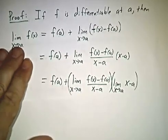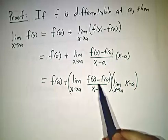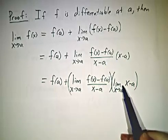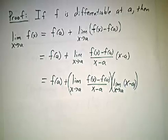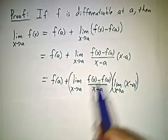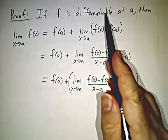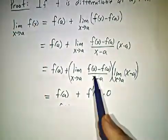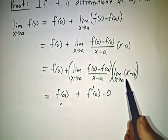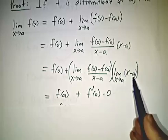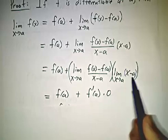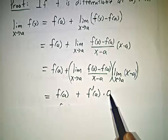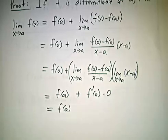Now we use one of our limit rules: the limit of a product is the limit of the first factor times the limit of the second factor, as long as both limits exist. We already assumed that f was differentiable, so this limit exists — not only exists, it's equal to f prime of a. And the limit as x approaches a of x minus a is just zero — it's a minus a, it's zero. So we get f of a plus f prime of a times zero, which is zero. And that's f of a. So that takes care of the theorem.